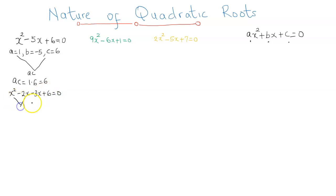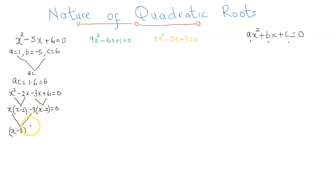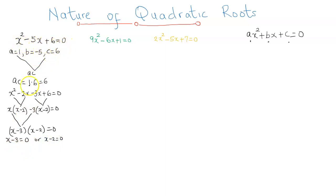Now I'm going to factor out the common items in each pair. In the first pair, I've got an x, so in the brackets I'm going to have x minus 2. In the second pair, I can factor out the minus 3. I just need to combine what's outside — x minus 3 — and pick the x minus 2, giving x minus 3 times x minus 2 equal to 0. Since the product of two items is 0, it's either x minus 3 equals 0 or x minus 2 equals 0. So the solution is x equal to 3 or x equal to 2.